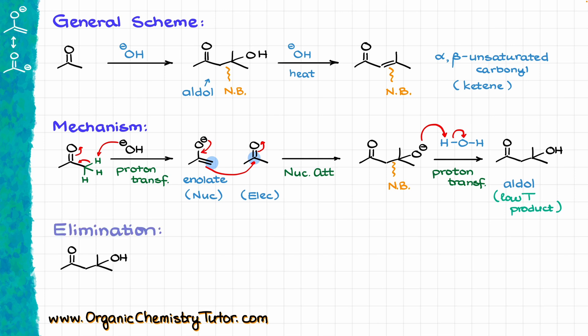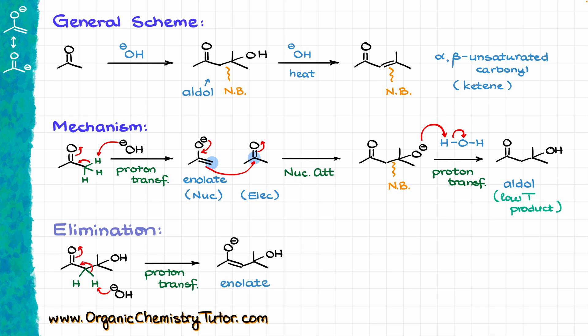I don't want to crowd my mechanism too much, so I'm going to write the elimination portion of the mechanism as a separate line. Starting from my aldol intermediate, the first step is to bring back our base and do a proton transfer to re-enolize our molecule, making the corresponding enolate intermediate. Once we have our enolate, we proceed to kicking our leaving group out — which in this case is going to be the OH group — making our final product the alpha-beta unsaturated carbonyl.